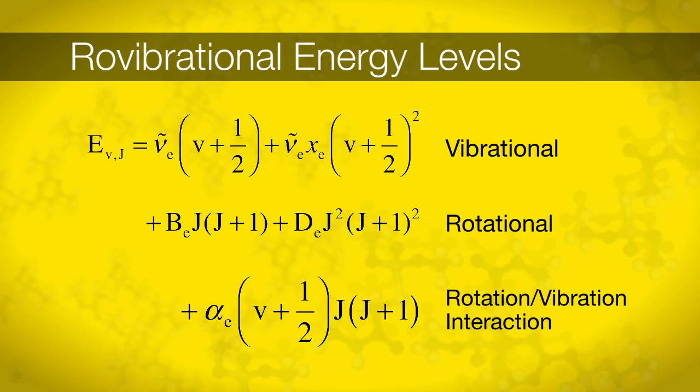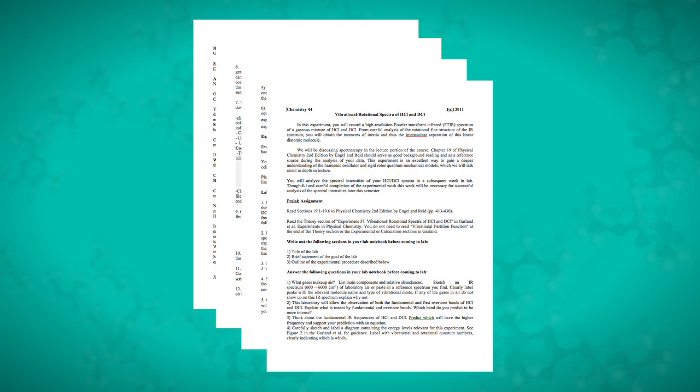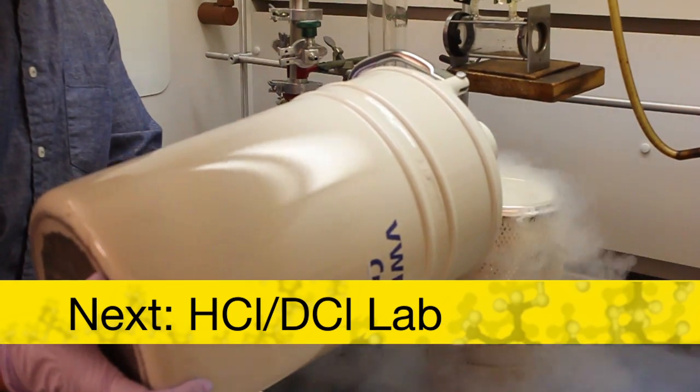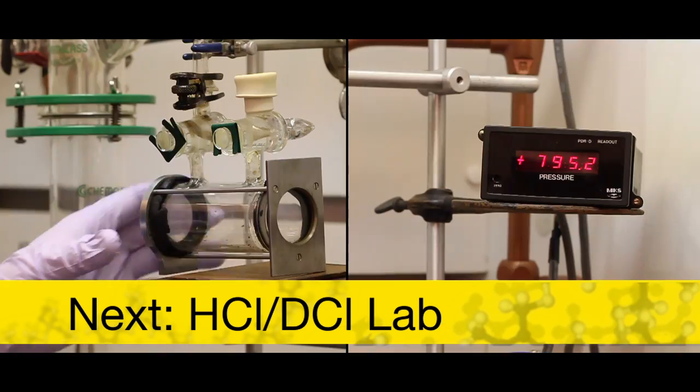In this experiment, you will record the transition frequencies observed in HCl and DCl. These are related to the energy levels that we have formulated here. After you assign the quantum numbers V and J to your transitions, you will use a linear regression to solve for the constants underlined here in red. More detailed information for this experiment can be found in the lab handout. In the next video, we will put this knowledge to use by acquiring the rovibrational spectrum of HCl and DCl.